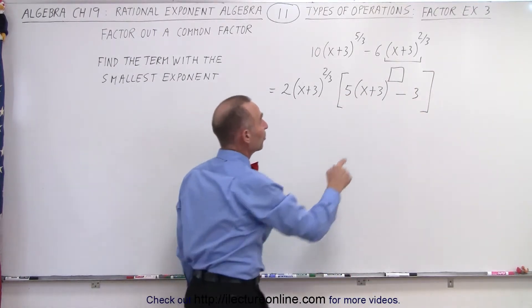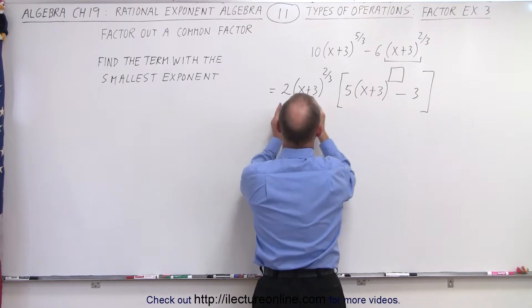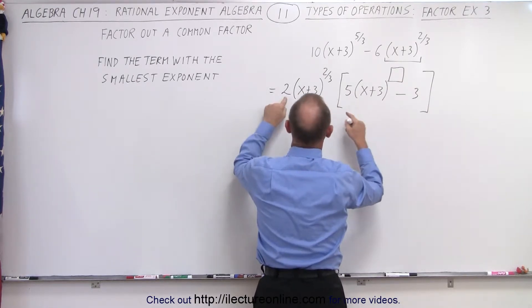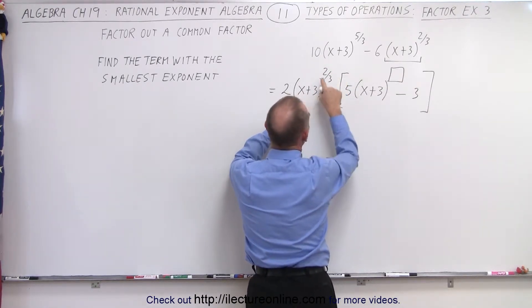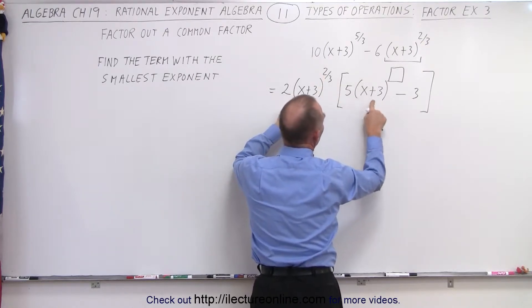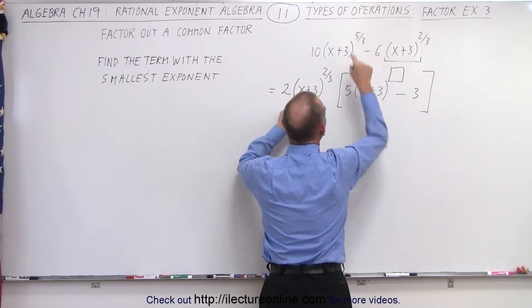Now, what should this exponent be? Well, when you multiply this back in here, we have 2 times 5 gives you 10, and (x+3)^(2/3) times (x+3) to some exponent should give you 5/3 back.